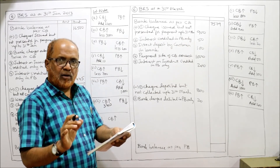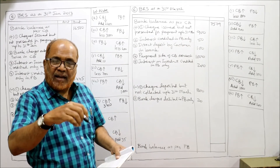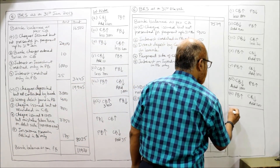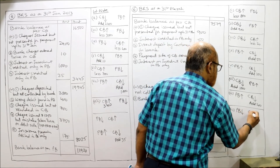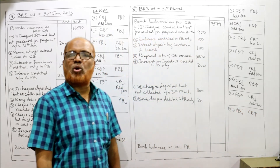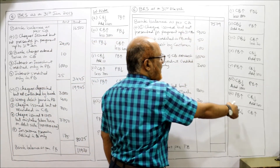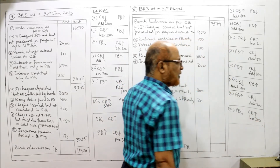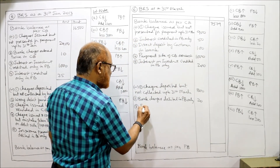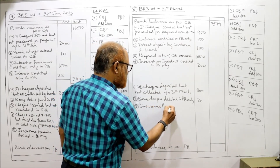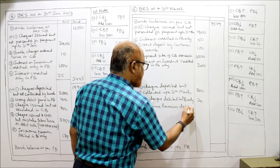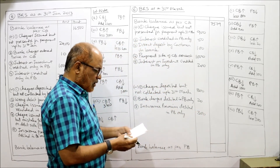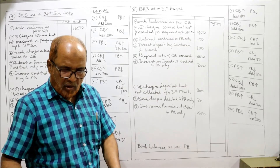Eighth and final item for Problem 6: insurance premium of rupees 300 was paid by the bank on behalf of the customer and appeared in the pass book. The banker debited the pass book, so pass book balance decreases. Cash book shows more balance as it was not recorded there. Our starting point, the cash book, shows more balance, so we subtract. Less: insurance premium debited in pass book only — rupees 300.